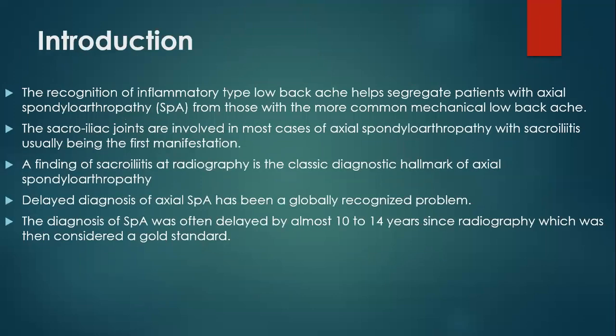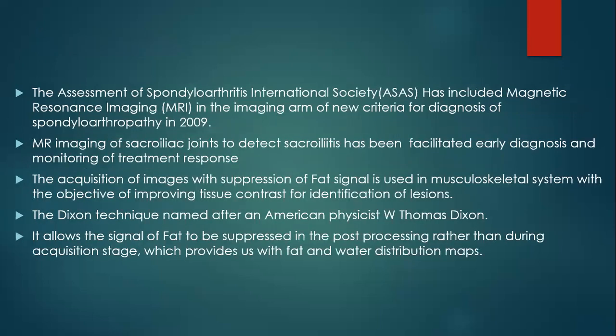Axial Spondyloarthropathy is a common differential diagnosis for lower backache and it is an inflammatory type of backache. That nature helps us differentiate it from mechanical backache. Sacroiliitis is the hallmark of Axial Spondyloarthropathy, and earlier, since only radiography was available, we used to miss patients with acute features, and diagnosis and consequent treatment was delayed by almost 10 to 14 years. The Assessment of Spondyloarthritis International Society then included MRI as the new imaging arm for the diagnosis of spondyloarthropathy in 2009, since it could pick up acute features of the disease so it could be handled and controlled at that stage itself.